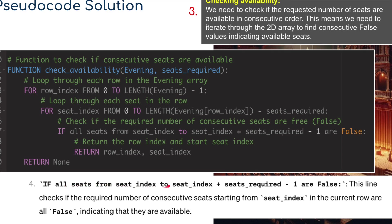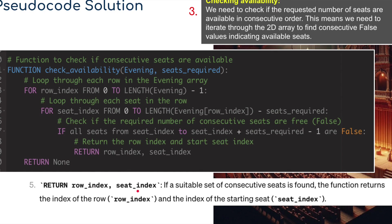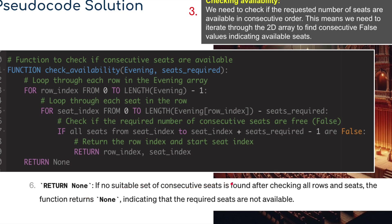Then we check: 'if all seats from seat_index to seat_index plus seats_required minus one are false'. This checks if the required number of consecutive seats starting from seat_index in the current row are all false, i.e., available. If a suitable set of consecutive seats is found, the function returns 'row_index' and 'seat_index' - basically which row and which starting seat is free. Finally, 'return None' - if no suitable consecutive seats are found after checking all rows and seats, the function returns None, indicating the required seats are not available.